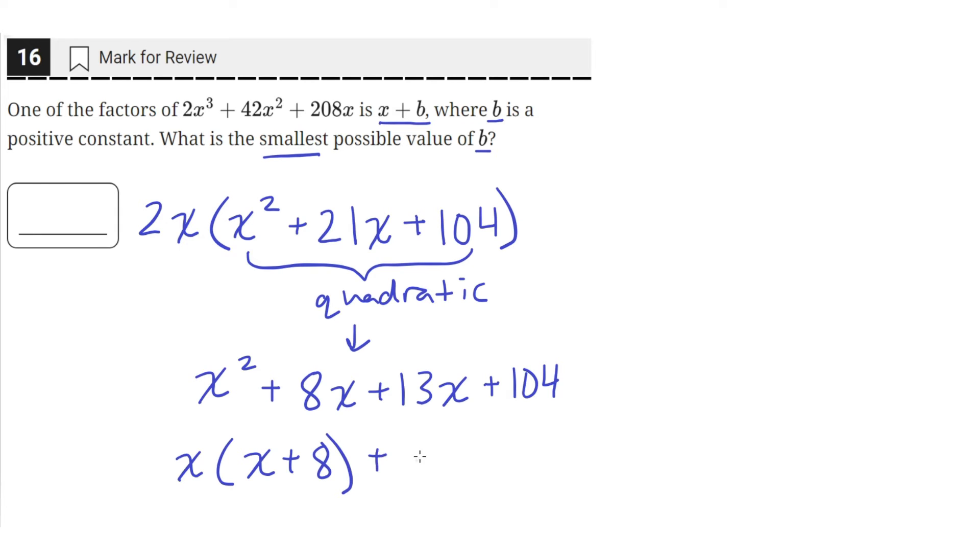And then we can factor out a 13 from these two terms. So when we factor out a 13, the first term is just x, and the second term will be an 8.